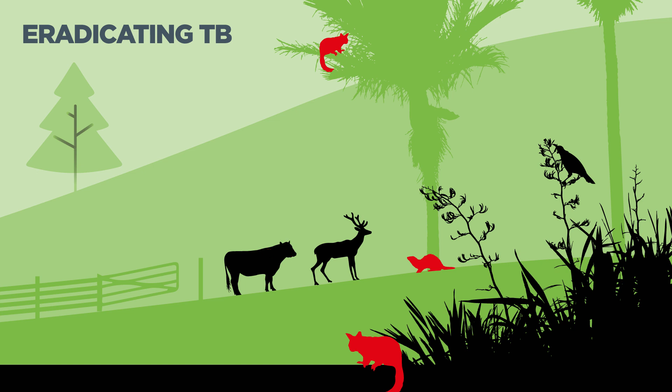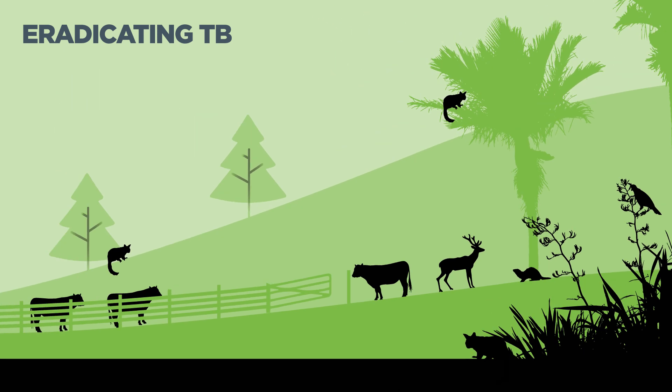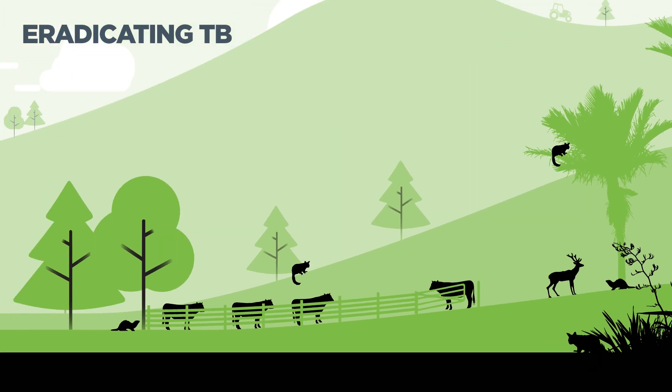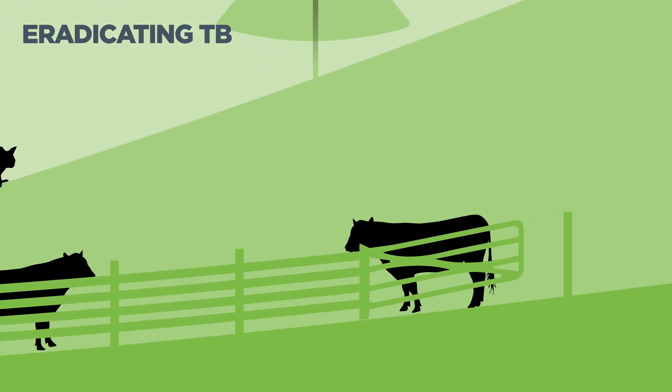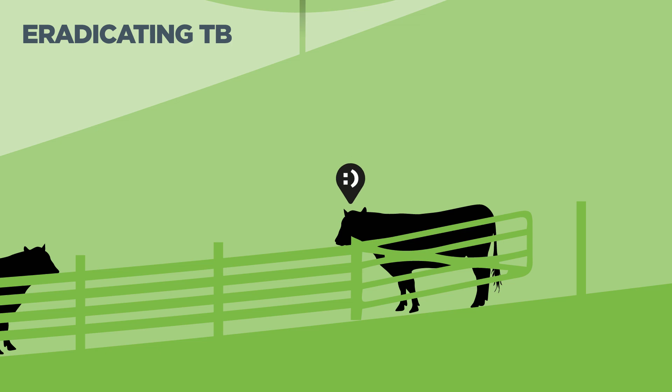TB Free takes the disease to such low levels in possums that it dies out. Then farmed cattle and deer will no longer be at risk of contracting TB from wildlife.